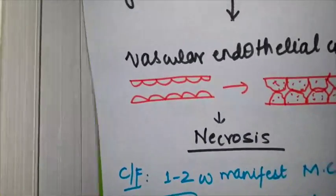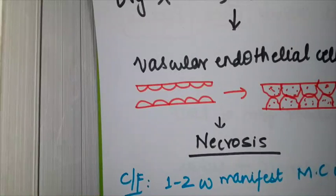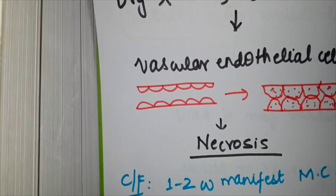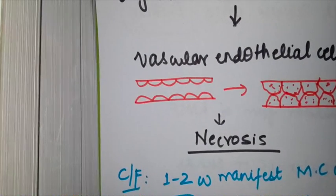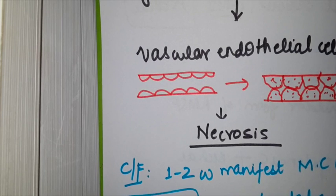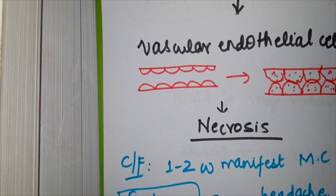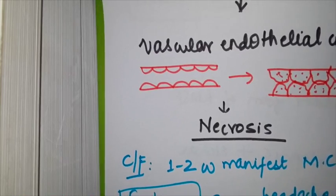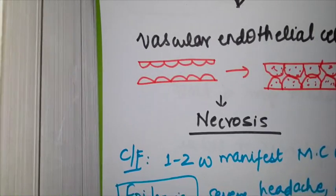It's most commonly seen in travelers, and clinical features manifest one to two weeks after their travel. During the travel they get infected, reach their place within one or two weeks, and symptoms start appearing after they reach the place. So it looks like they got infected after coming back to their own place. This is where we need to be careful.